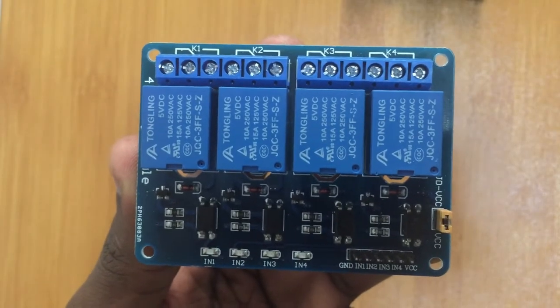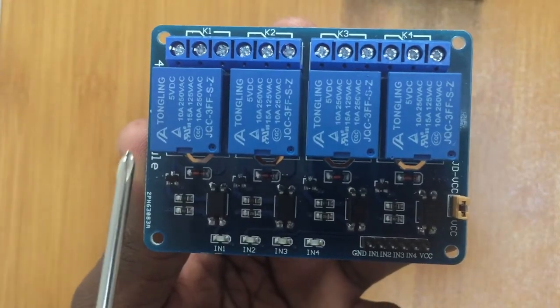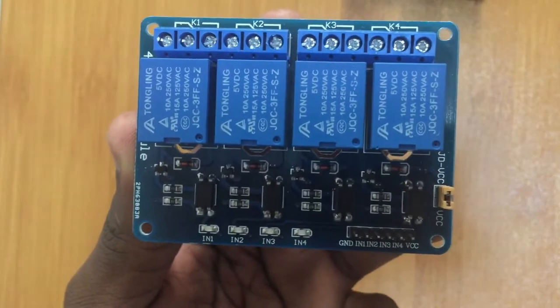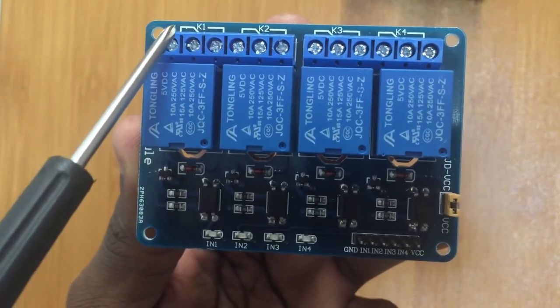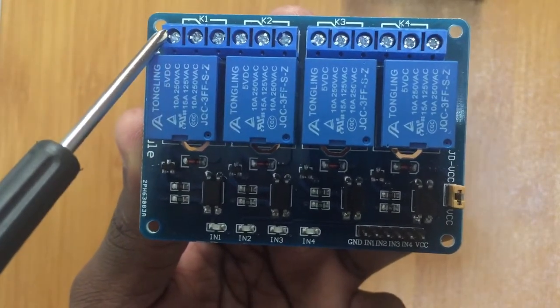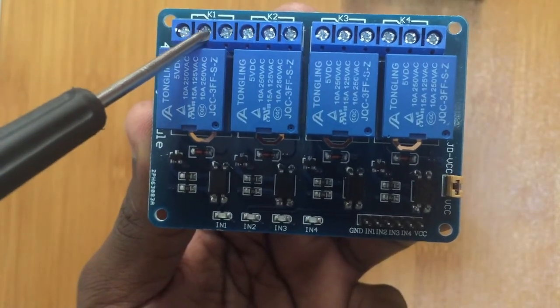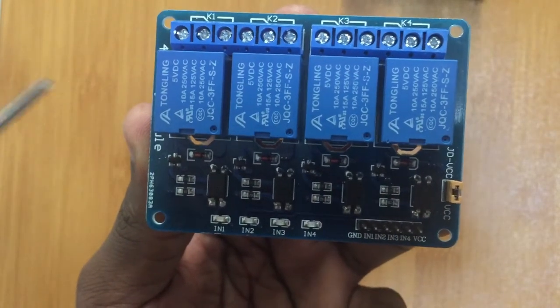This is a four relay module. You can see there are one, two, three, four relays. Each of these relays has three terminals here, and those terminals include the common terminal which is the middle one, then we have the normally closed and a normally open terminal.